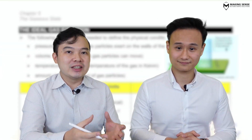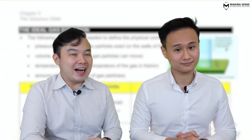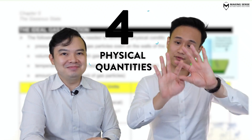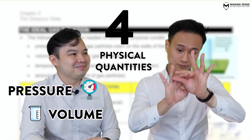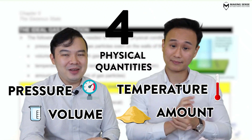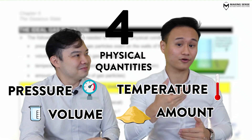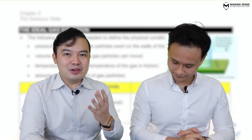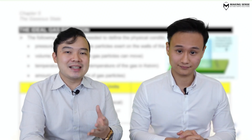For gases, there are certain physical quantities that are important. Mr Tim, can you remind us what those are? We have four of them: pressure, volume, temperature, and amount — and by amount I mean number of moles.